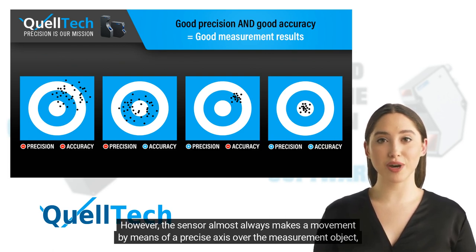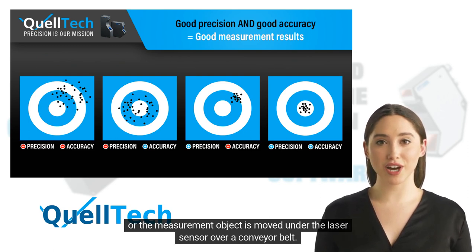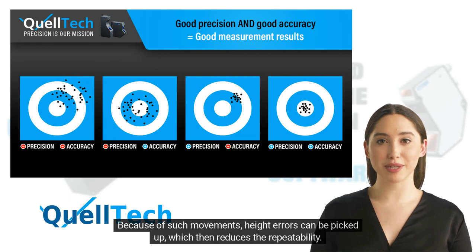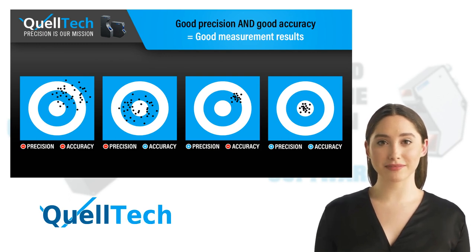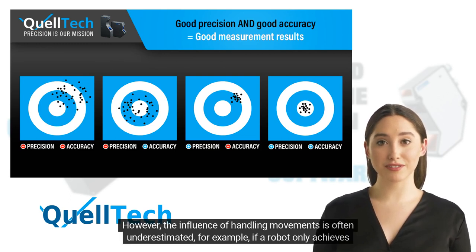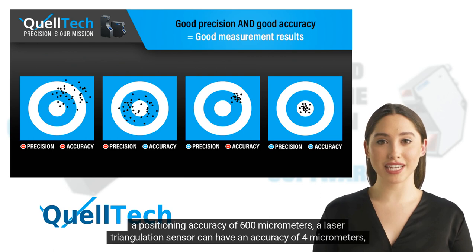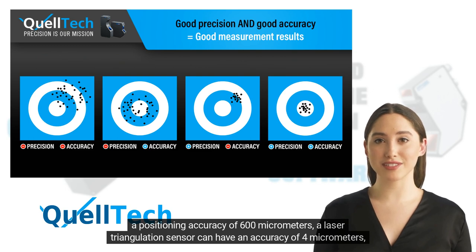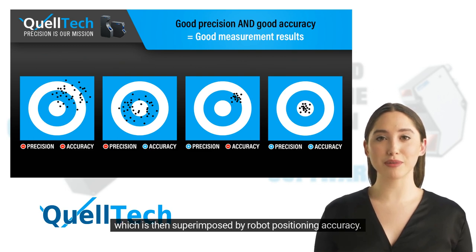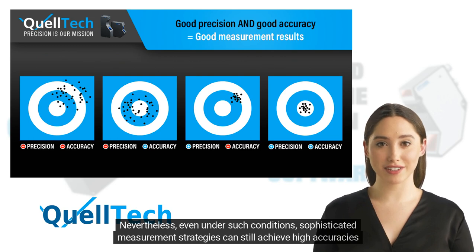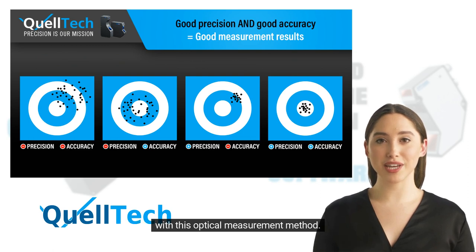However, the sensor almost always makes a movement by means of a precise axis over the measurement object, or the measurement object is moved under the laser sensor over a conveyor belt. Because of such movements, height errors can be picked up, which then reduces the repeatability. The influence of handling movements is often underestimated. For example, if a robot only achieves a positioning accuracy of 600 micrometers, a laser triangulation sensor can have an accuracy of 4 micrometers, which is then superimposed by the robot positioning accuracy. Nevertheless, even under such conditions, sophisticated measurement strategies can still achieve high accuracies with this optical measurement method.